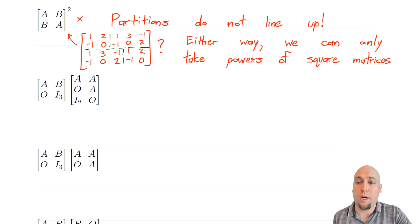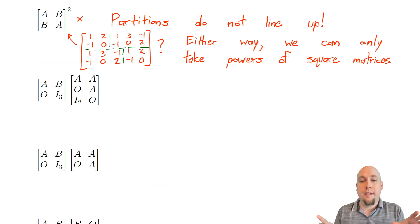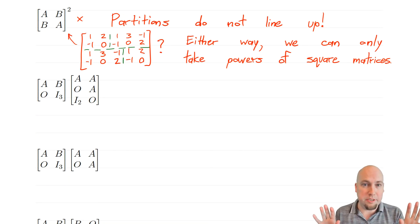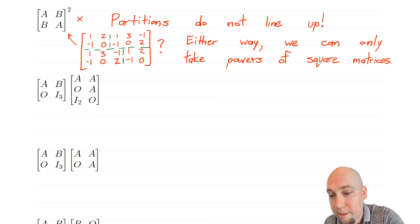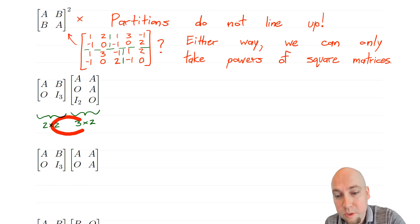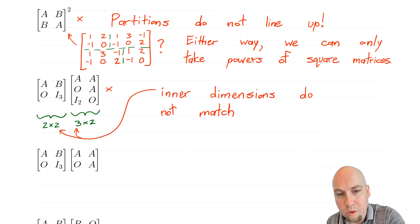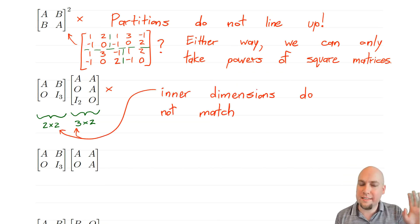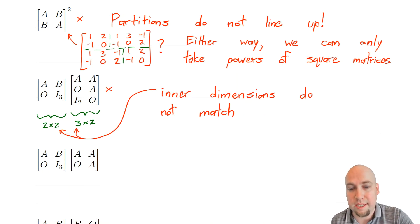Another thing to watch out for is illustrated by a second example: your block matrices must have proper sizes to do matrix multiplication. The inner dimensions have to agree, just like with regular matrix multiplication. In this example, we can't do it because we have a 2×2 block times a 3×2 block, and those inner dimensions — 2 and 3 — don't match.